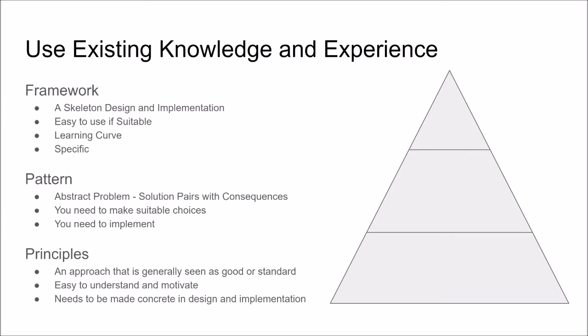Last, we have principles, and this is more of a loose description of an approach that is generally seen as good or as a standard in certain types of systems. Principles are often quite easy to understand and motivate, but they can be hard to adapt to your specific needs as you need to make a concrete design and implementation. You can look upon these three parts as a kind of pyramid: we have the principles as the foundation, then principles can be realized in patterns, and patterns in turn are often used in frameworks. By understanding principles, it's easier to understand patterns; by understanding patterns, it's easier to understand frameworks.